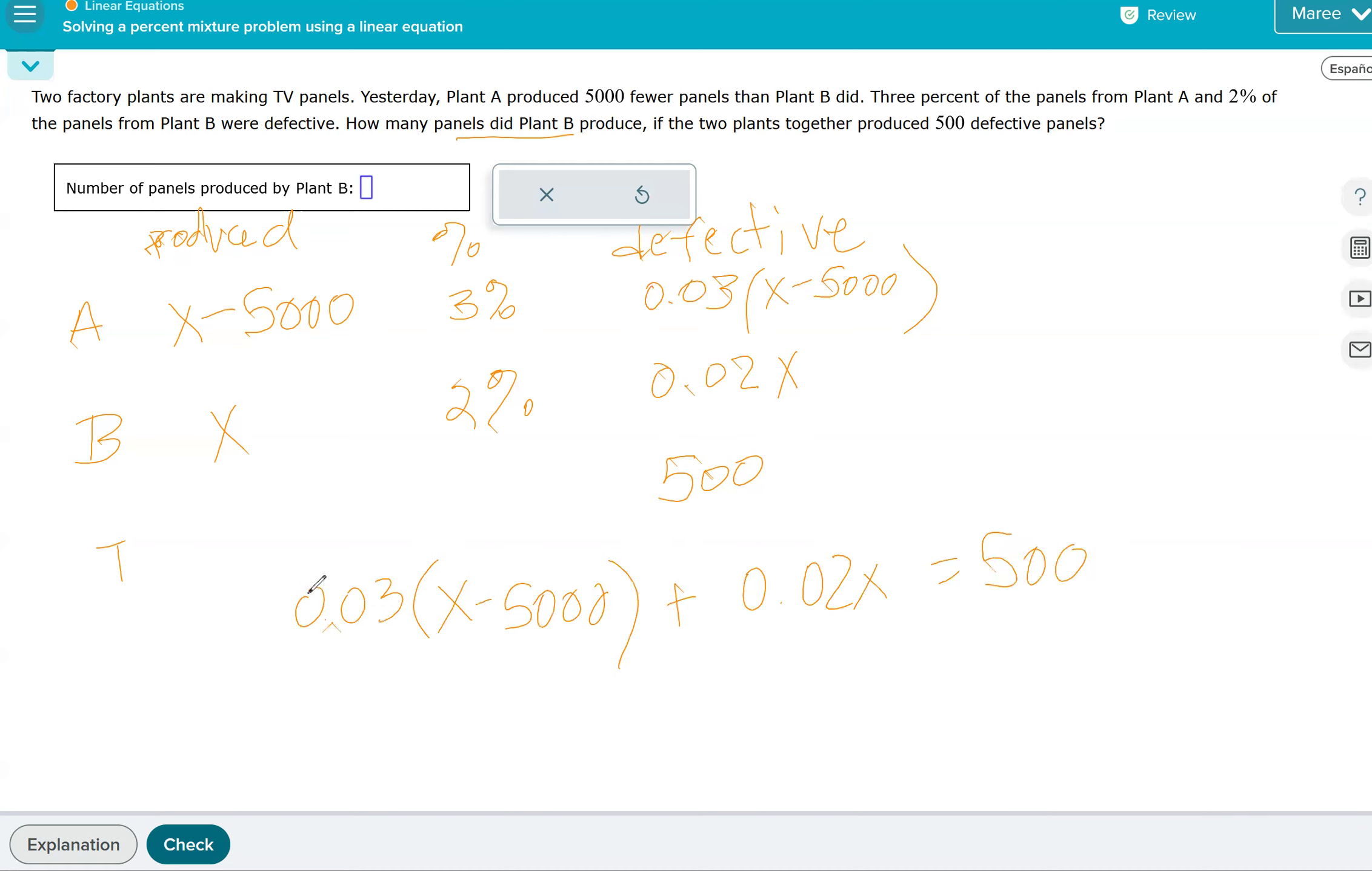I like to get rid of my decimals. They're in the hundredths place, so if we multiply every term by 100, we'll get rid of our decimals. So we have 3 times X minus 5,000 plus, and then this is going to be 2X equals, now we're multiplying this by 100, so it's going to be 50,000.